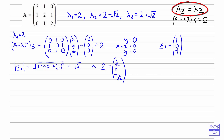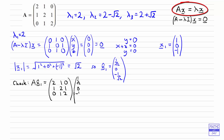The beauty of a question like this is that it's really easy to check — we just need to multiply the matrix by the eigenvector and we should get the same as multiplying the eigenvalue by the eigenvector. If you don't have much time in the exam just skip the checking, but while learning it's a good idea to see what's going on. So let's write down the check: we're working out the matrix A — which is 2, 1, 0; 1, 2, 1; 0, 1, 2 — multiplied by the eigenvector 1 over root 2, 0, minus 1 over root 2.